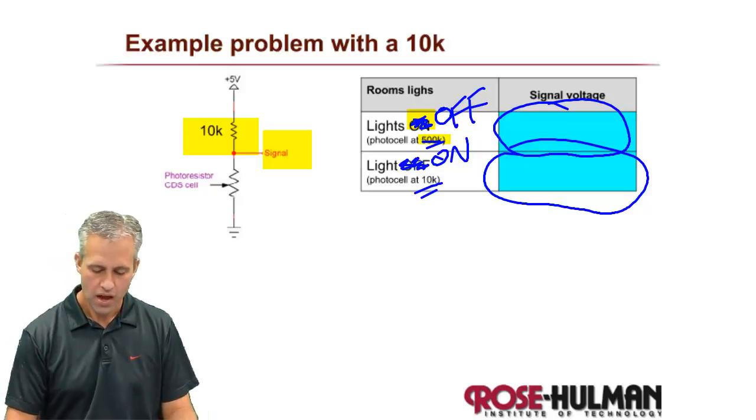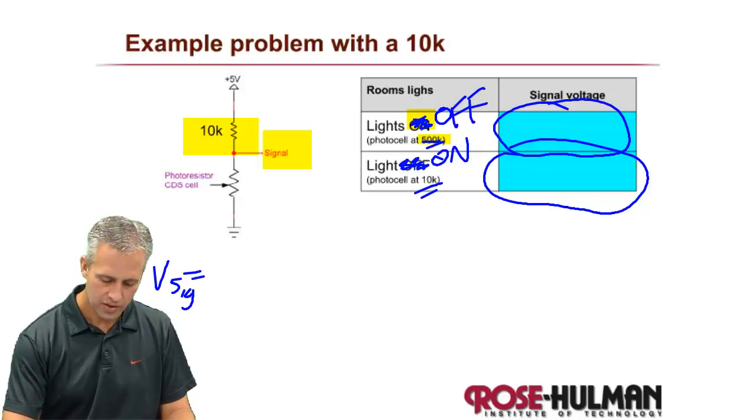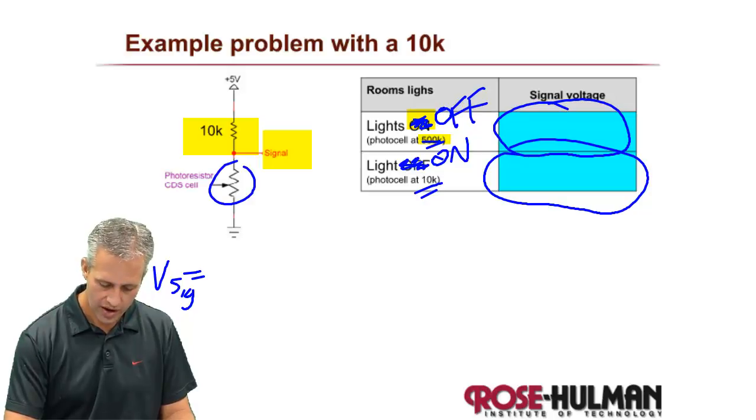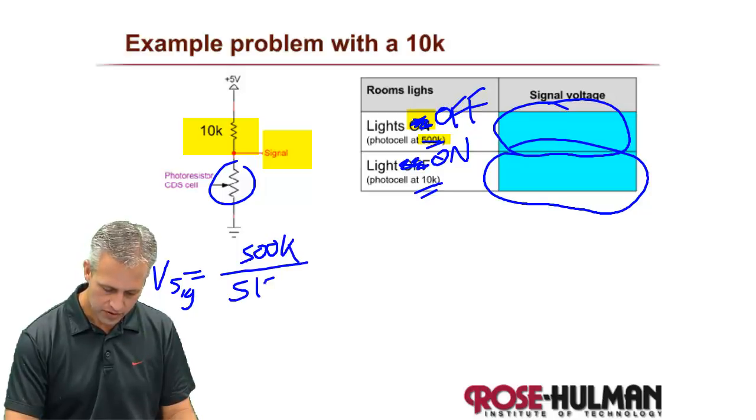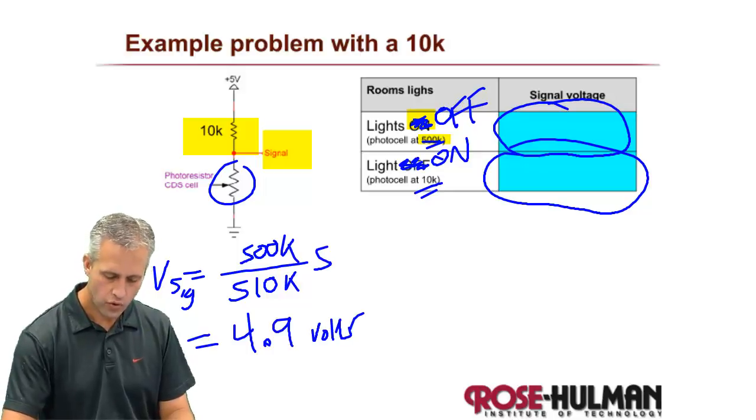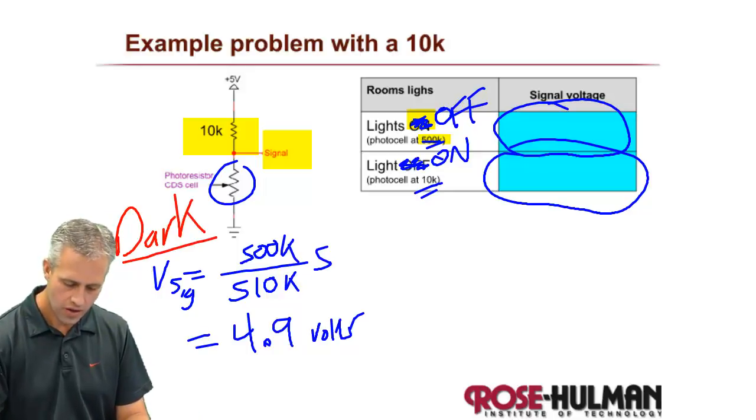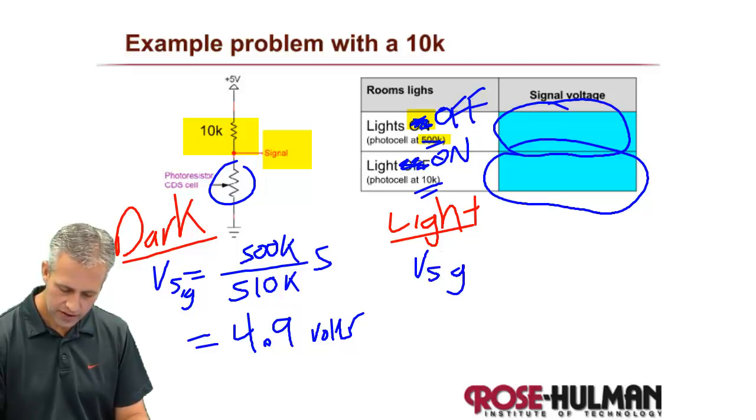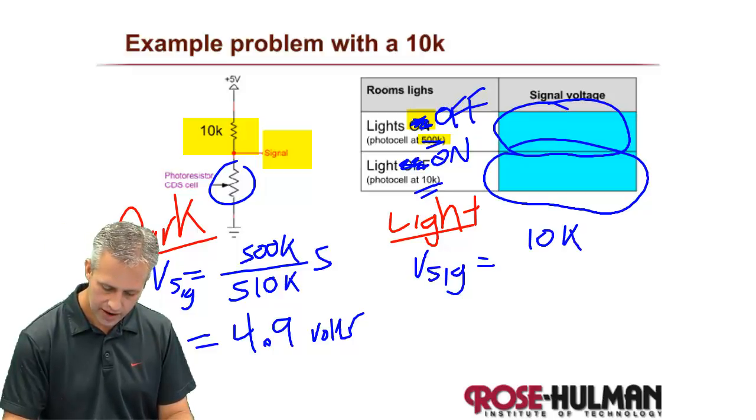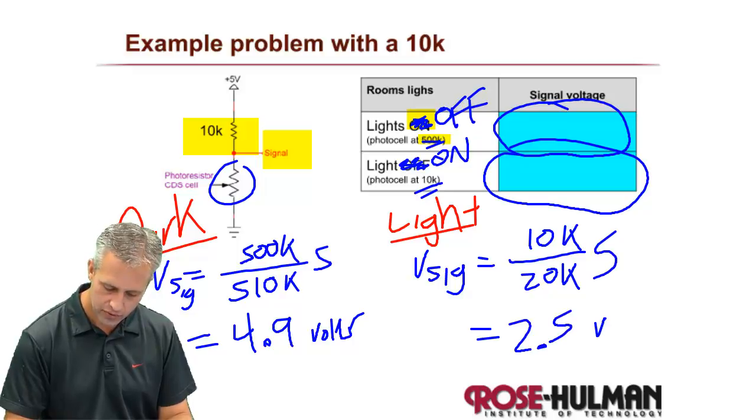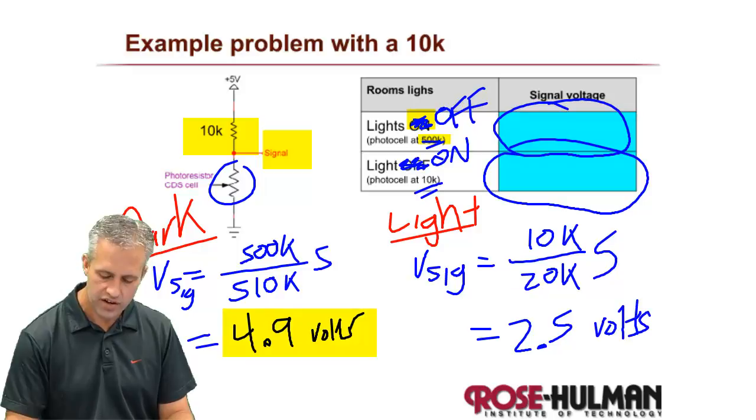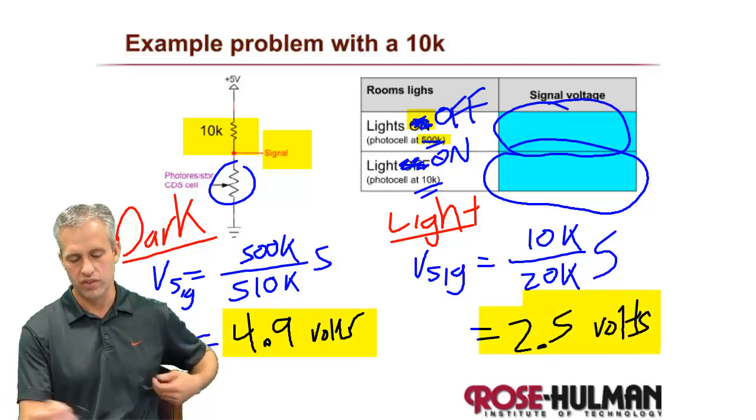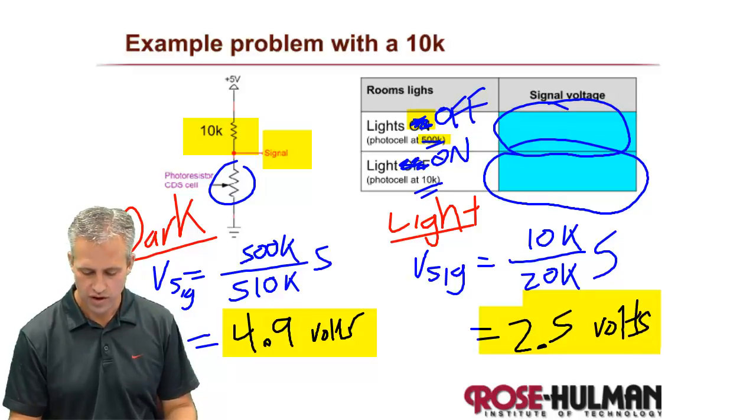All right, I'm going to work it as well. So it's really not hard. It's just Vsig is equal to R2, which is this guy. So let's do the off one first. Over their sum, which is 510k times 5. So there it's 4.9. So that's the dark. And then if we wanted the light, so in the light, it would be more like Vsig is equal to 10k over their combined total, which is 20k times 5. I don't need a calculator to do that. That's two and a half volts. So you can see that the swing here is actually not that amazing.